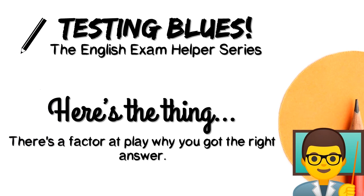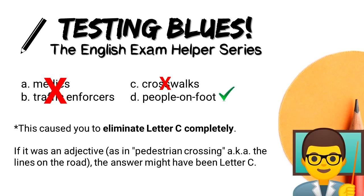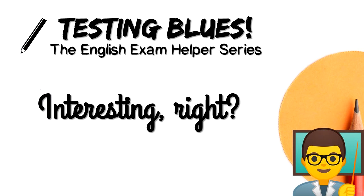Here's the thing. There's a factor at play why you got the right answer. It is because you know — consciously or subconsciously — that the word 'pedestrians' in this question is used as a noun. This causes you to eliminate letter C completely. If it was an adjective, as in 'pedestrian crossing' — aka the lines on the road — the answer might have been letter C.